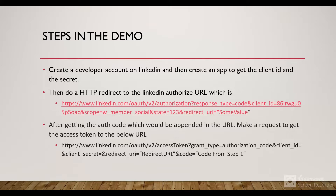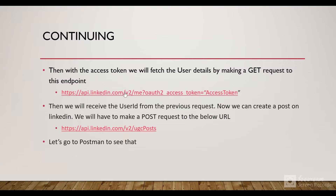The steps are: first, create a developer account on LinkedIn and create an app to get the client ID and client secret. Then do an HTTP redirect to the LinkedIn authorization URL where the user authorizes and accepts permissions. After that, the auth code gets appended to the URL. We then fetch the access token and fetch the user details to get the user ID, which is required to make a post to LinkedIn.